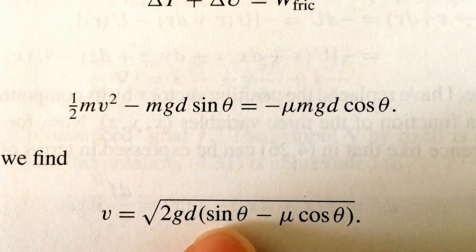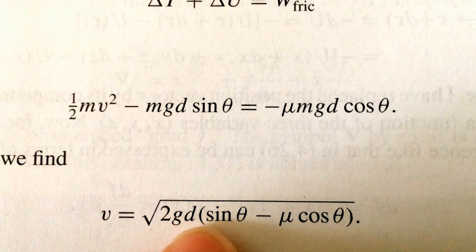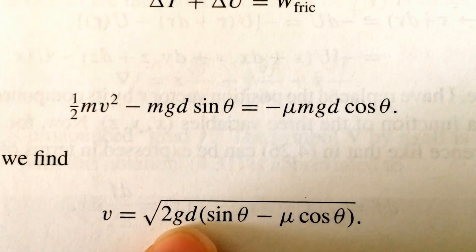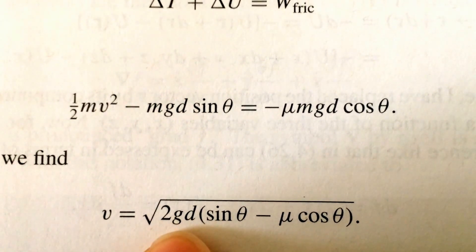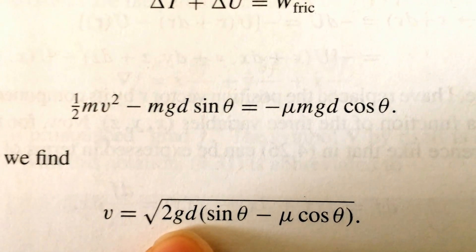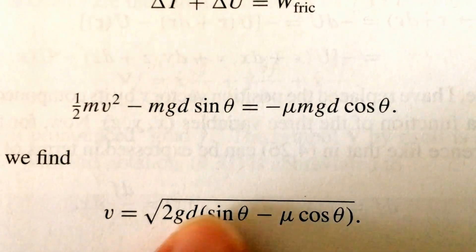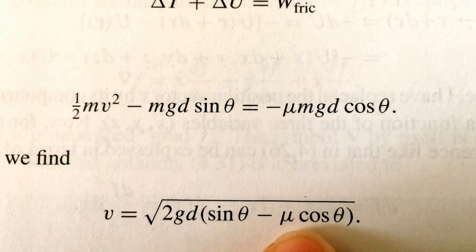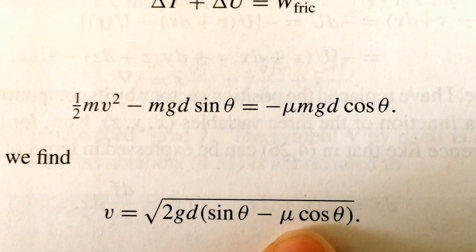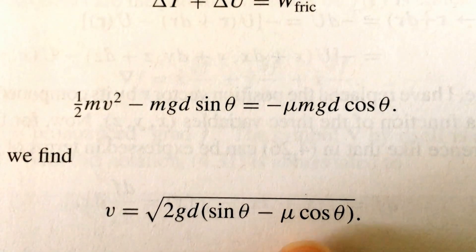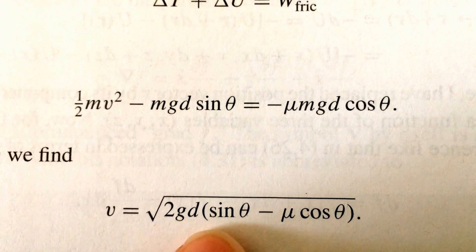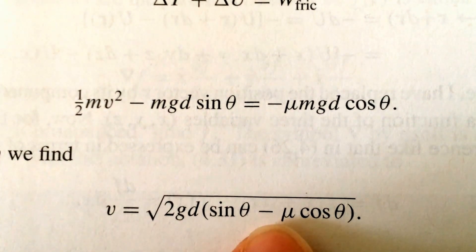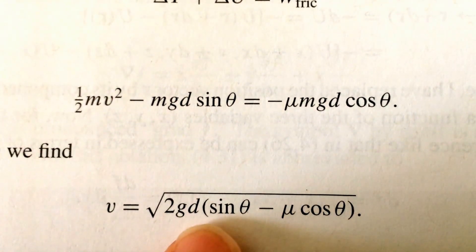The velocity of the block sliding down the incline is given as the square root of the full expression. The first term under the square root is simply the change in gravitational potential — if there were no friction, that would be the only term. Because we also have friction, that additional term is always reducing the velocity, so the block moves slower than it would without friction.